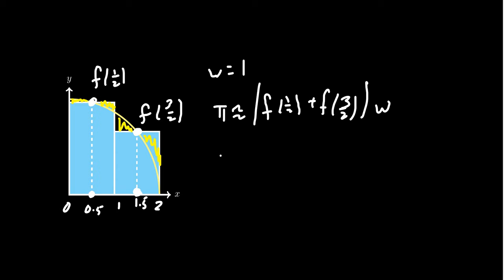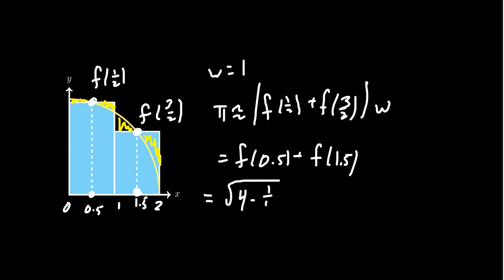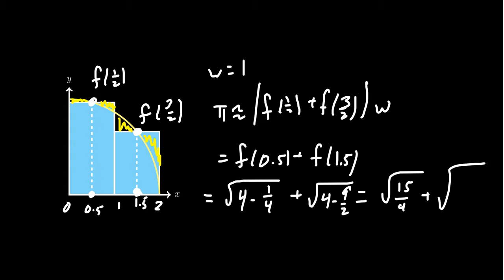So π ≈ f(0.5) + f(1.5) = √(4 − 1/4) + √(4 − 9/4) = √(15/4) + √(7/4) = (√15 + √7)/2 ≈ 3.2594. The midpoint rule balances things out: there's some gap below the curve but also some above, so they partially cancel. This is M2 — using two rectangles with midpoints.